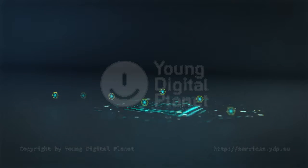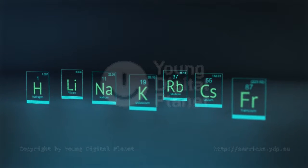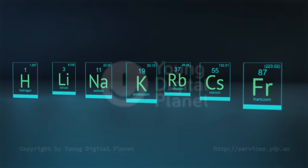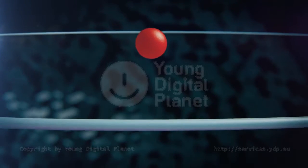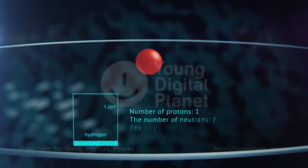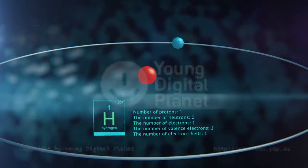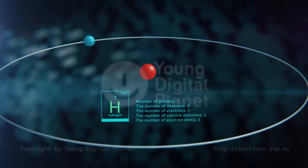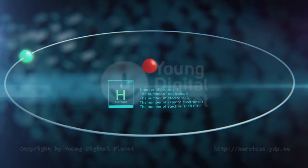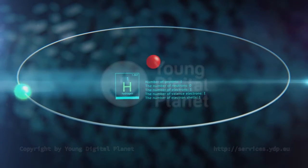Let us have a look at the atomic structure of elements from the first group of the periodic table. Hydrogen is the simplest chemical element. Its nucleus consists of one proton, which is orbited by one electron, which is at the same time a valence electron on a single electron shell.